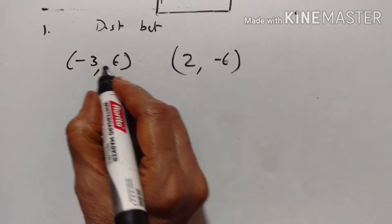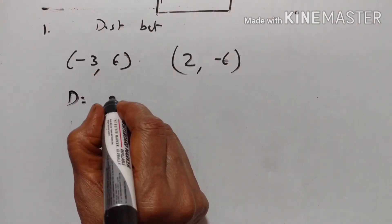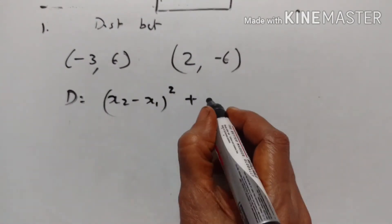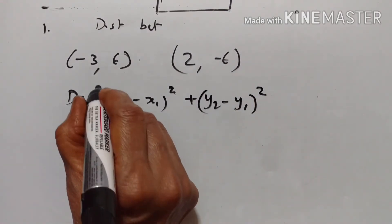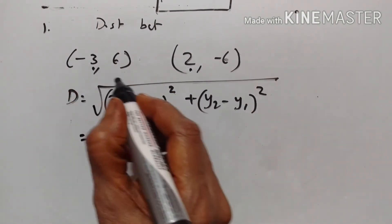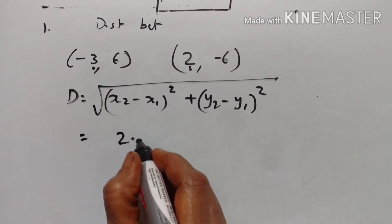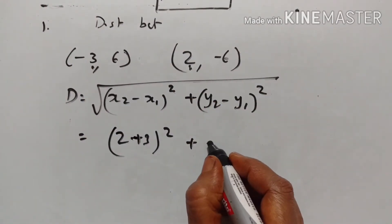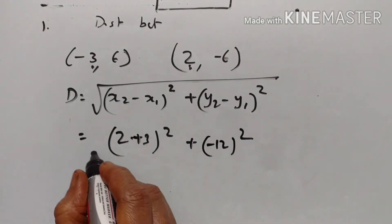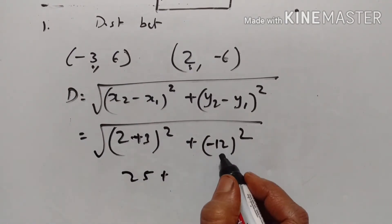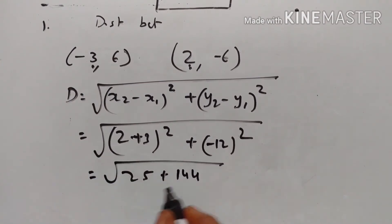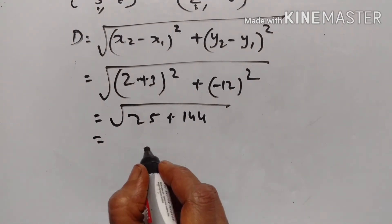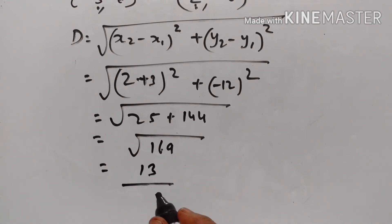Exercise 2B, Problem 1: Find the distance between the given pairs of points. Using d = √((x₂ - x₁)² + (y₂ - y₁)²): x₂ - x₁ = 2 - (-3) = 5, and y₂ - y₁ = -6 - 6 = -12. So d = √(5² + (-12)²) = √(25 + 144) = √169 = 13 units.